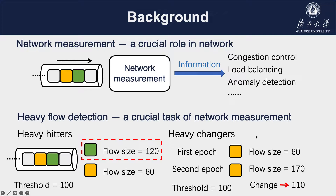Network measurement provides important information for network operation, such as congestion control, load balancing, and anomaly detection. One critical task of network measurement is heavy flow detection. Heavy flow detection identifies a large flow whose packet count or packet size is larger than a threshold. According to the flow ID, which typically consists of a five-tuple or source-destination IP address.